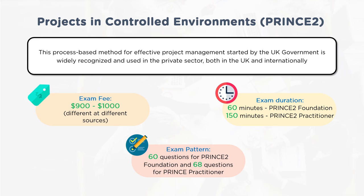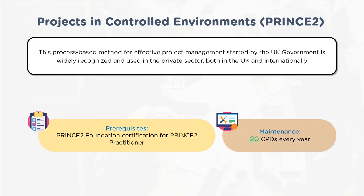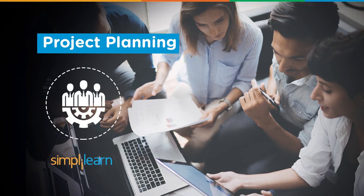PRINCE2 certification has two levels: Foundation (60 multiple-choice questions) and Practitioner (68 questions). Each correct answer carries one mark with no negative scoring, and one must score 55% to pass. PRINCE2 Foundation has no prerequisites, while PRINCE2 Foundation is a prerequisite for the Practitioner exam. To maintain the certificate, one must achieve 20 CPDs (Continued Professional Development units) every year.